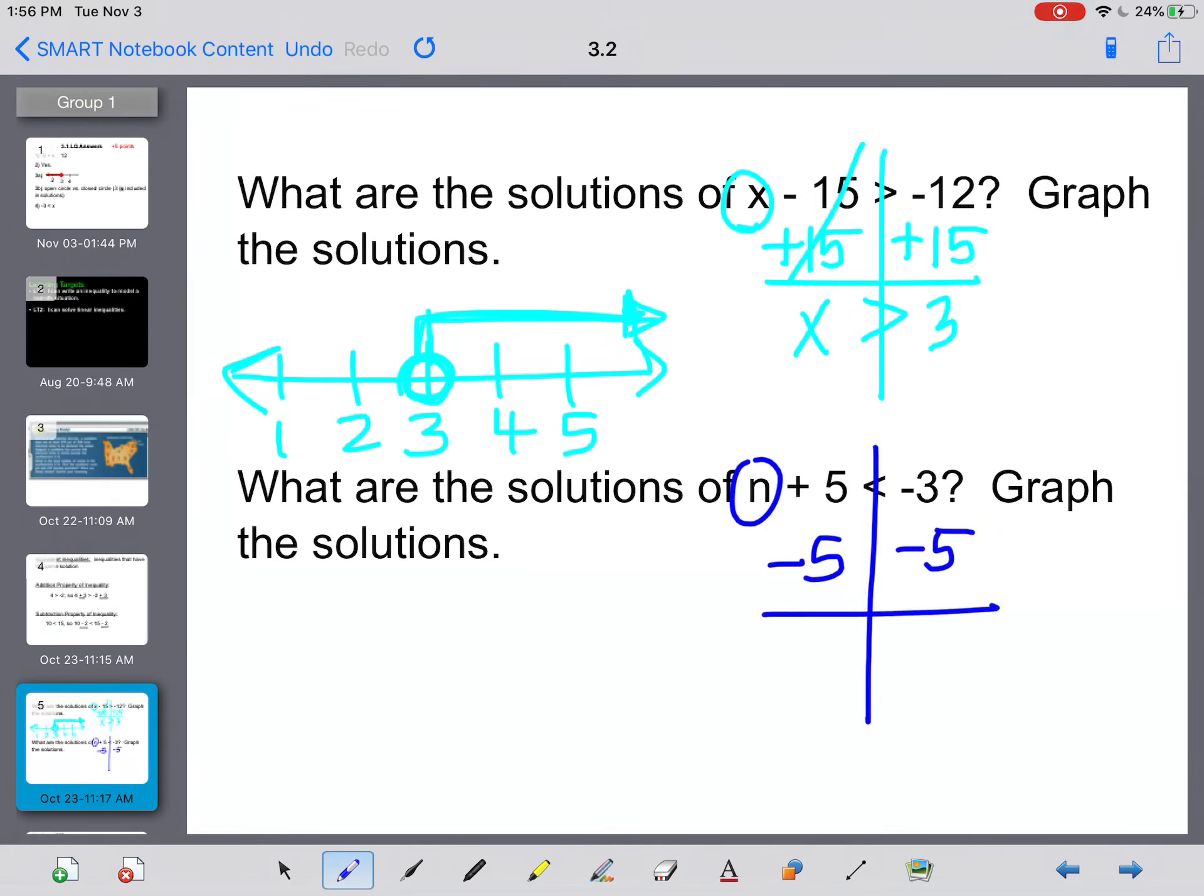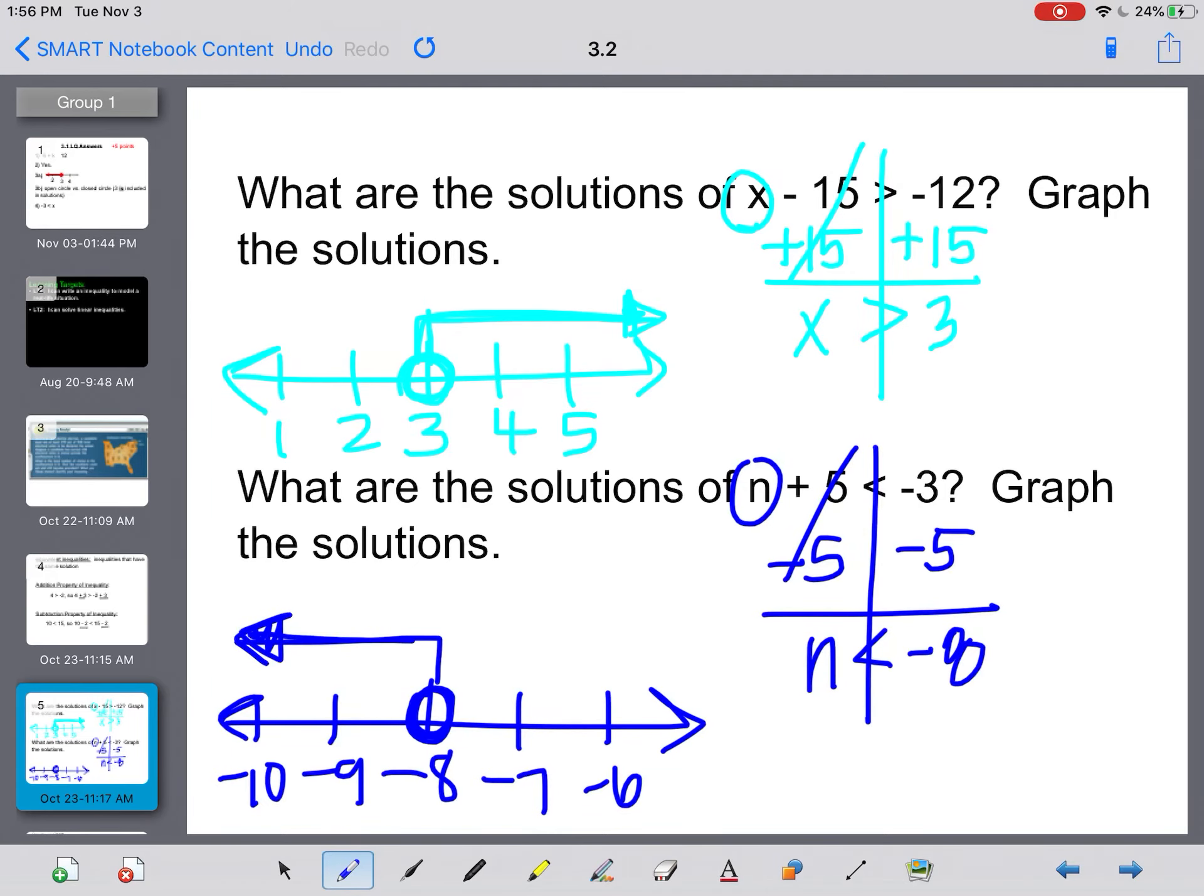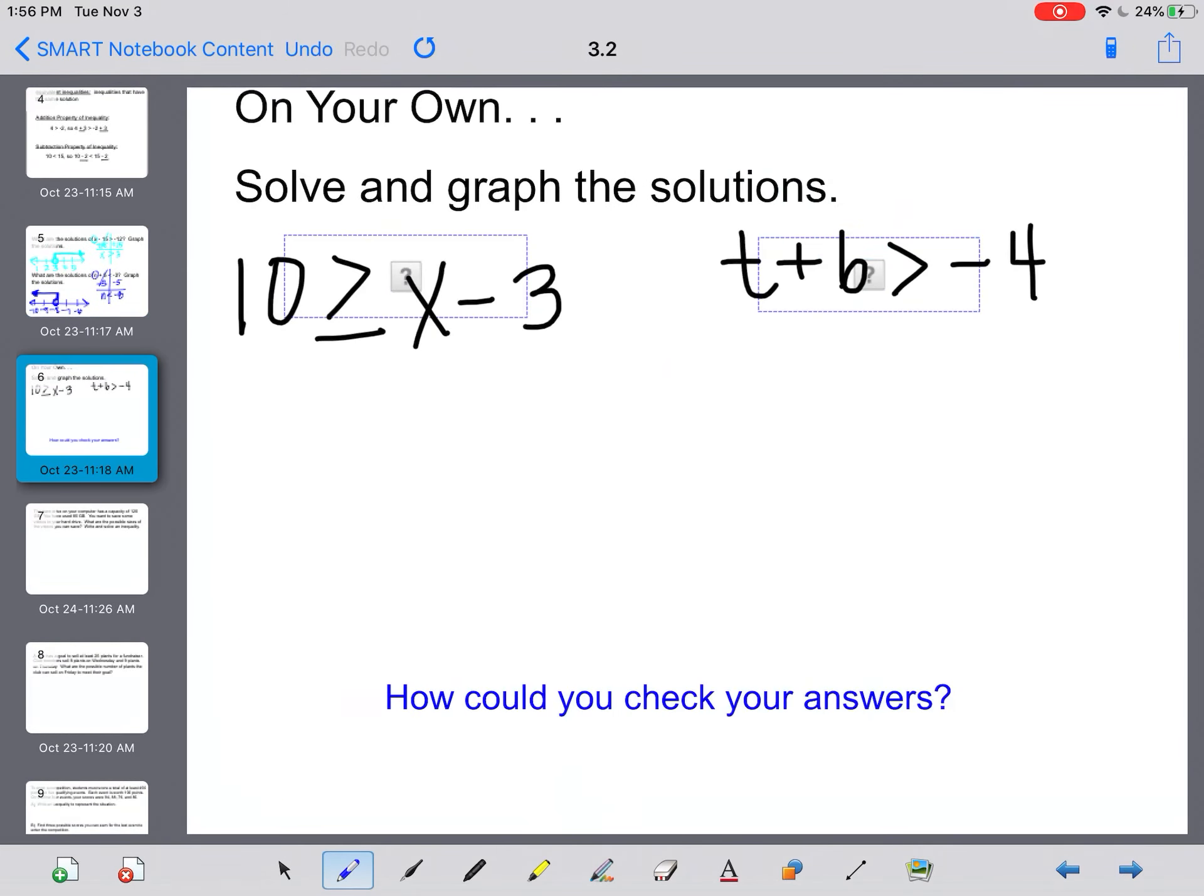What are the solutions of n plus 5 is less than negative 3? The opposite of adding 5 is subtracting 5. So I have n left over here, still less than, and negative 3 minus 5 is negative 8. When I make my number line, I need negative 8 with a couple more. Open circle at negative 8. And everything has to be less than negative 8, so I'm going to shade to the left.